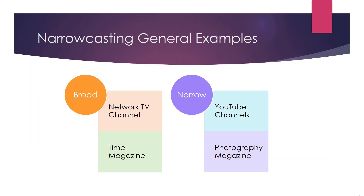Here are some general examples of narrowcasting. Network television — your standard primetime TV channel — would be considered broadcasting, trying to reach a wide range of people. However, YouTube channels on very specific topics such as wood carving or quilting are narrowcasting. Similarly, Time magazine is very broad, whereas a photography magazine targets people really interested in photography — a much narrower audience.